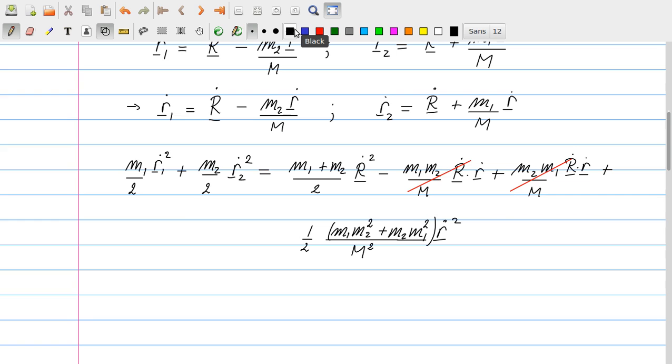And then finally I have a term proportional to the little r dot squared. And we see that here we can extract a factor of m1 plus m2 from the parenthesis, and that allows us to streamline the equations a little bit. So first we have the term capital M over 2 capital R dot squared, and then there is a term. So if I extract a factor of m1 plus m2 that cancels against one of the M's in the denominator.